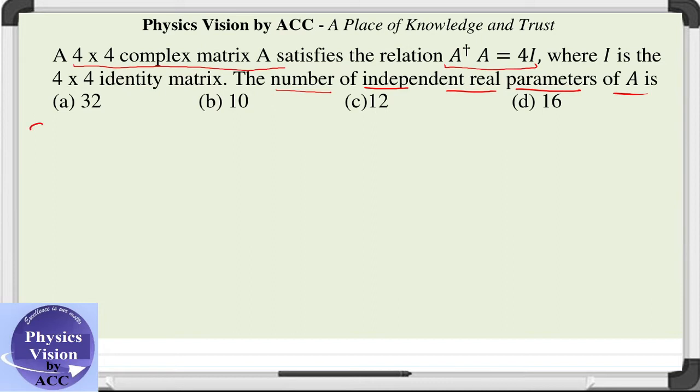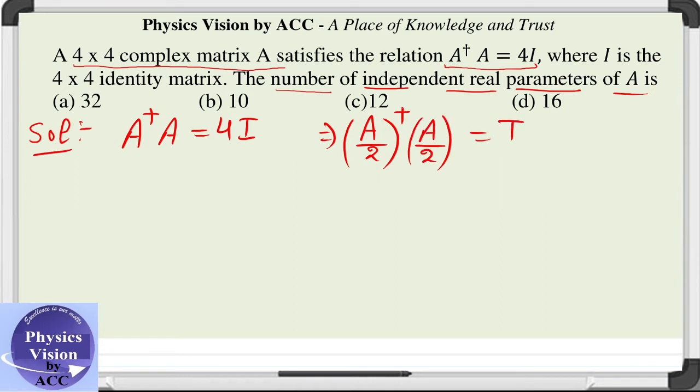It is a very good question. Let us solve this. First, let's write out the given condition: A dagger A equals 4I. This implies if we divide A by 2, we get A by 2 dagger A by 2 equals an identity matrix. As we know, this is the condition of a unitary matrix.